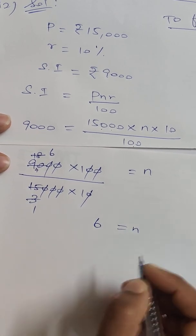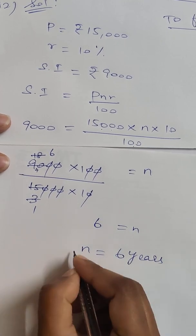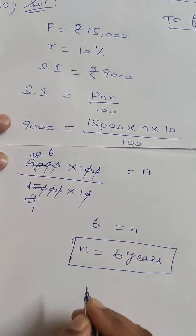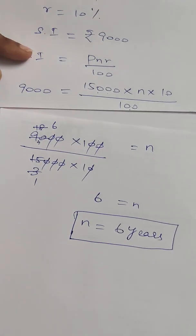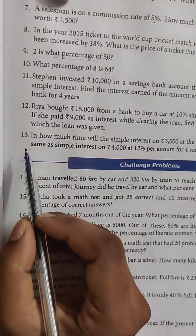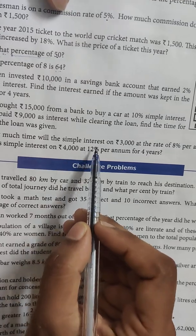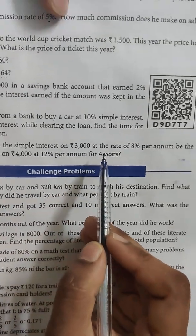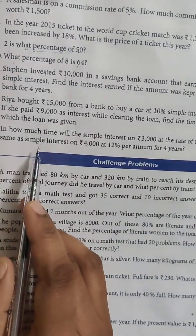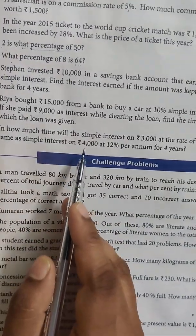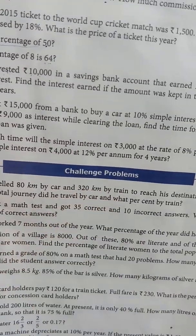Next, the 13th sum. For what time will Rs. 3,000 at the rate of 8% per annum give the same simple interest as Rs. 4,000 at 12% per annum for 4 years?